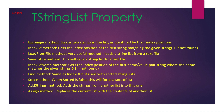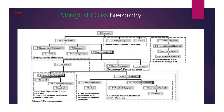Some important methods include LoadFromFile, so we can load a set of strings from a file into our TStringList object, and we can also save to file from the TStringList object. Other methods include IndexOf, IndexOfName, Find, Sort, and Assign. The hierarchy is: TStringList derives from TStrings, TStrings derives from TPersistent, and TPersistent derives from TObject.